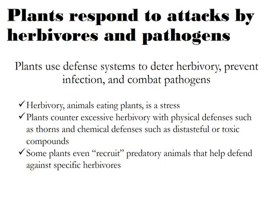Plants respond to attack by herbivores and pathogens through morphological changes, by producing chemical signals, or by producing compounds like waxes, suberin, and cutin. Plants use defense systems to deter herbivores, prevent infection, and combat pathogens. Herbivory is animals eating plants. Plants counter excessive herbivory with physical defenses such as thorns, and chemical defenses such as distasteful or toxic compounds. Some plants even recruit predatory animals to help defend against specific herbivores.